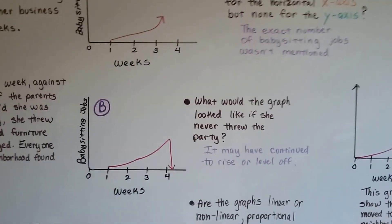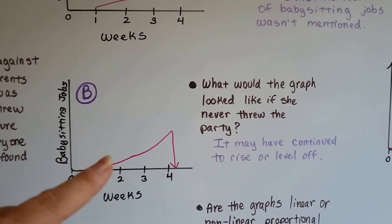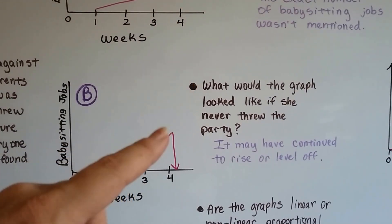And what would the graph look like if she never threw the party? Well, it probably would have continued to rise or level off.